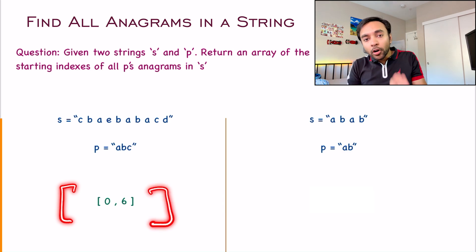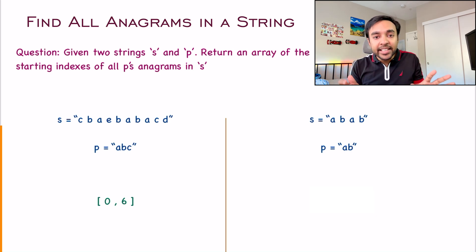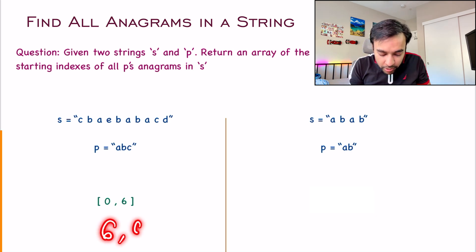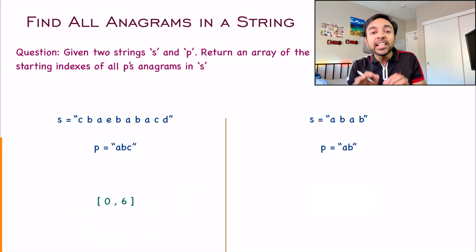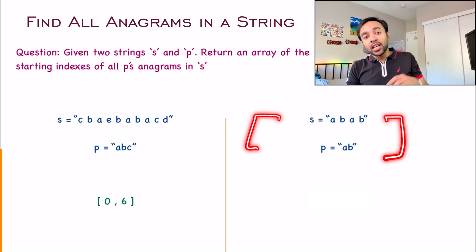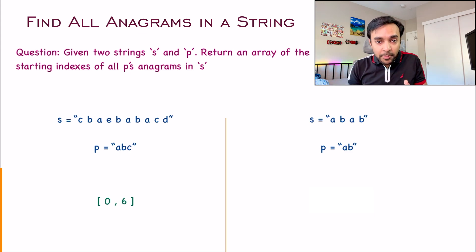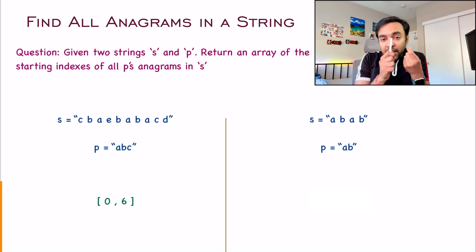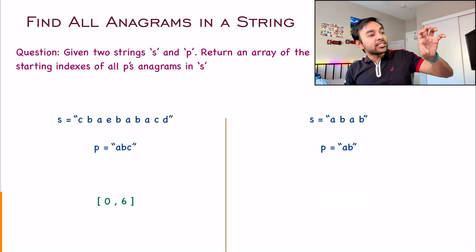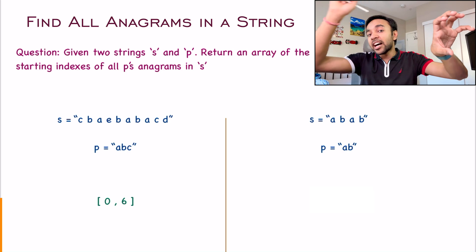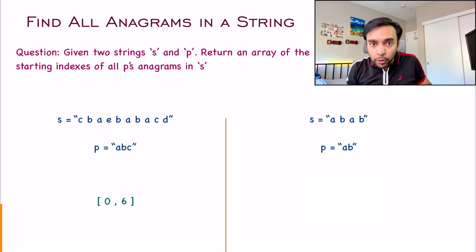And the problem also states that you can output this in any order. If you also output 6,0, that is also a completely valid answer. Similarly, if you look at the second test case, you may already assume that there can be so many anagrams possible and there are so many different sequences. The only catch over here is that whenever you are looking at an index, then you are looking at all of the contiguous characters.